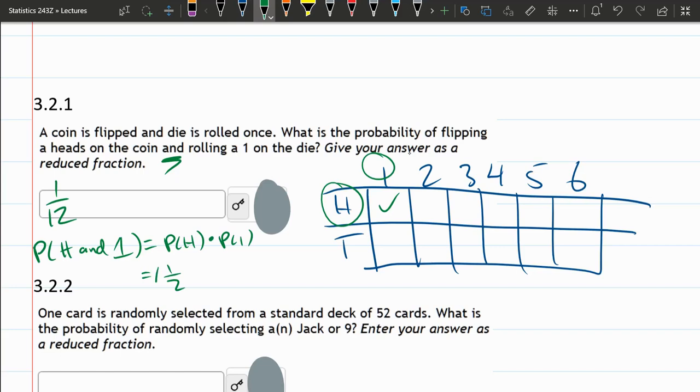So heads is 1 half, 1 out of 2. Probability of rolling a 1 is 1 out of 6. You multiply these. You multiply numerators. So 1 times 1 is 1, 2 times 6 is 12. So that's another way to compute this probability here.